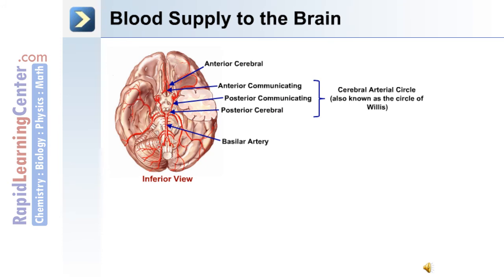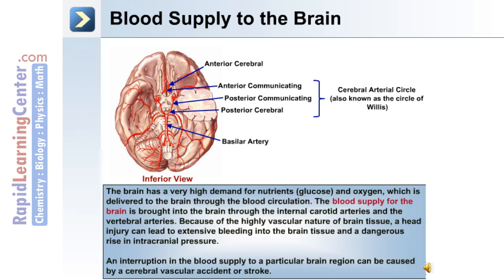This image depicts the major branches of the blood supply to the brain, shown in an inferior view. Starting at the posterior end, you can see the basilar artery. The cerebral arterial circle, or Circle of Willis, is made up of the anterior communicating artery, posterior communicating artery, posterior cerebral artery, and the anterior cerebral artery.